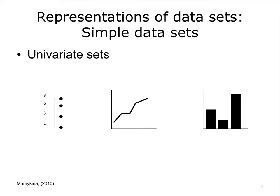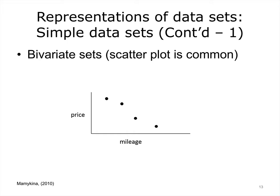Univariate sets are the simplest sets you will encounter. Many everyday visualizations — for example, line or bar graphs — deal with univariate data. Bivariate sets are more complex; they include two variables that often have some dependency. The purpose of the visualization is to make that dependency apparent to the naked eye. For example, if there is any dependency between price of a car and its mileage, a scatter plot would make it possible to see it.